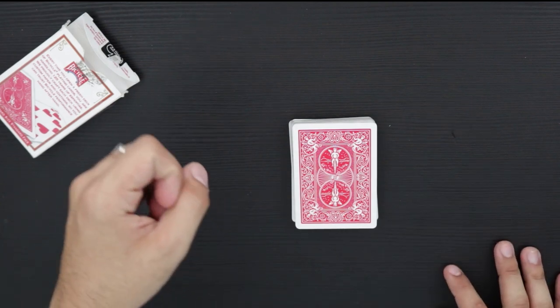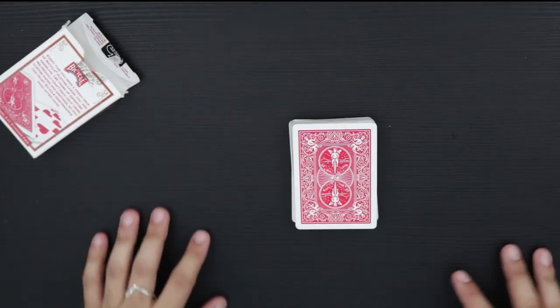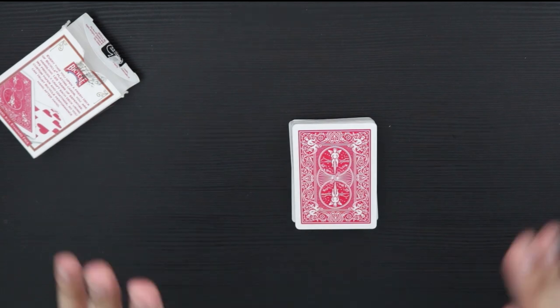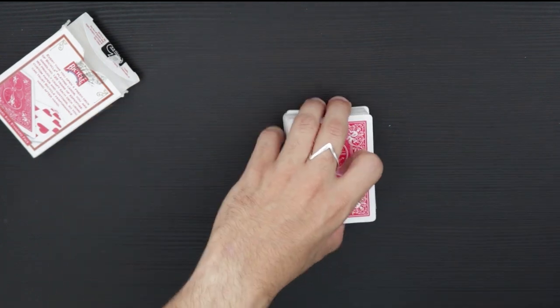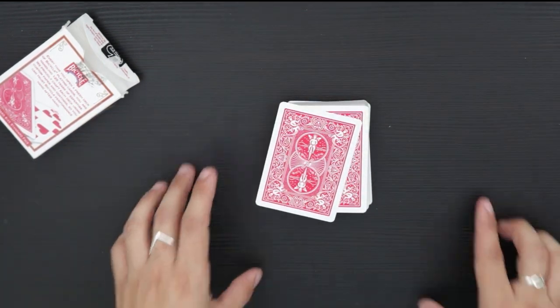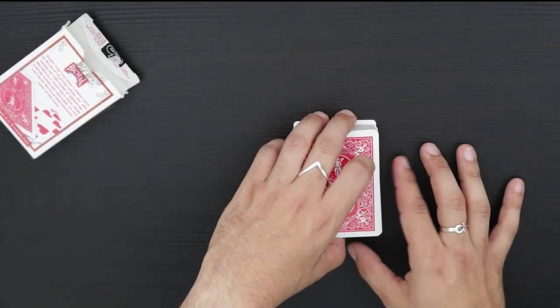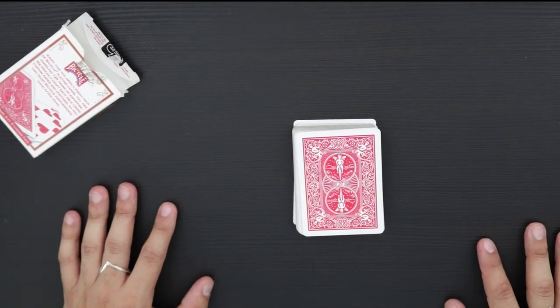So you tell them to imagine a deck of cards in their hand and to imagine giving you either the number cards or the picture cards. Let's pretend they give you the number cards in this situation. You go, 'Okay, that's great, we'll get rid of them.' So spread the face cards in your hand and separate them between reds and blacks.